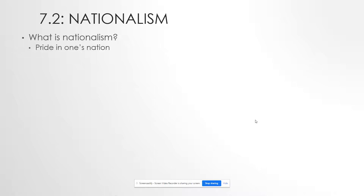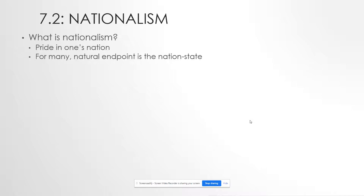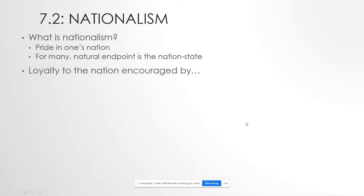It's important to remember what a nation is not: a nation is not a country. A nation can be part of a country, and we can look at countries as nation-states. By the time we get to the 19th century, an increasing number of politicians in Europe are beginning to see the natural endpoint of nationalism as the nation-state. If you want peace and stability and you want members of a nation to be happy, you need to give them their own country. That process is still playing out today in the 21st century — that's the genie-in-the-bottle thing again.